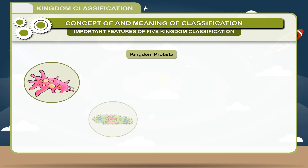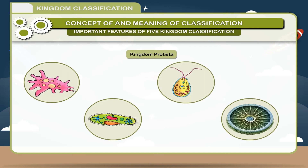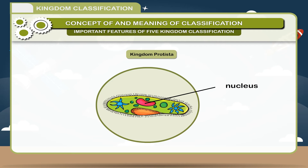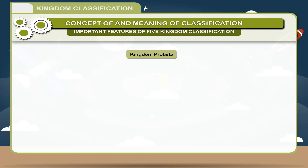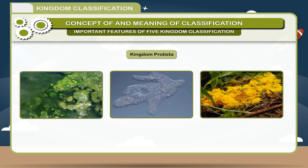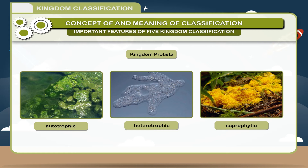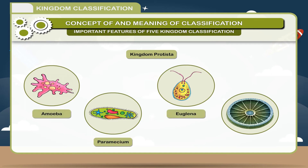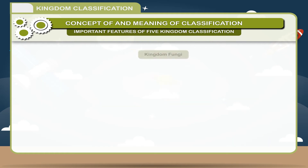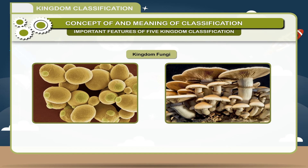Kingdom Protista: This kingdom includes all the microscopic, unicellular plants and animals. The cells of protists have a well-defined nucleus. They move with organs of locomotion like cilia, flagella, or pseudopodia. They possess different types of modes of nutrition — some are autotrophic, heterotrophic, or saprophytic in nature. They are found almost everywhere. Examples: amoeba, paramecium, euglena, and diatoms.